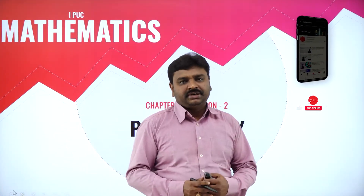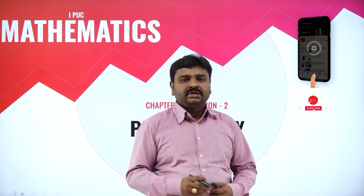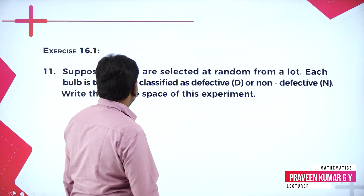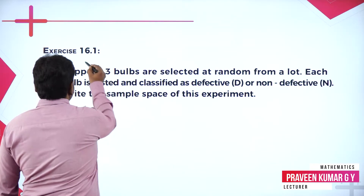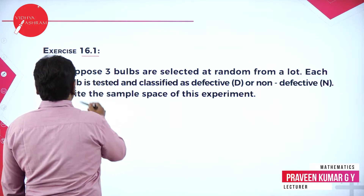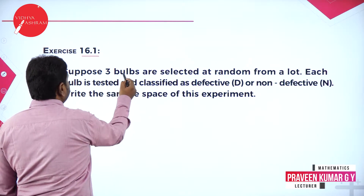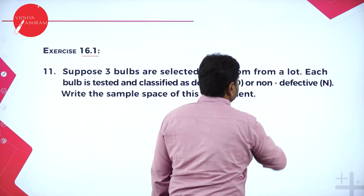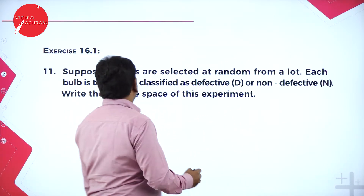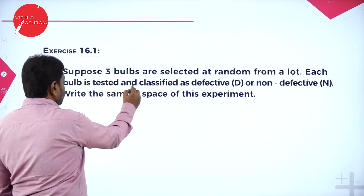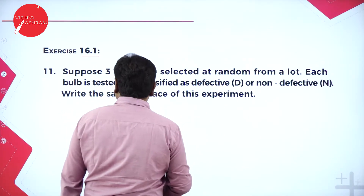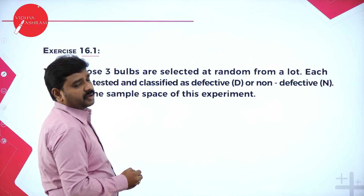Welcome to the session, dear students. Today we will go ahead with the problems of probability. In Exercise 16.1, they are asking: suppose three bulbs are selected at random from a lot, and each bulb is tested and classified as defective or non-defective. Write the sample space for this experiment.